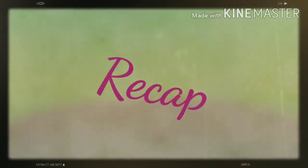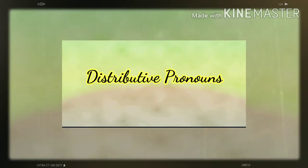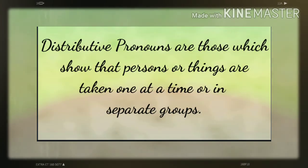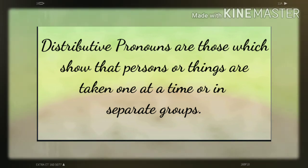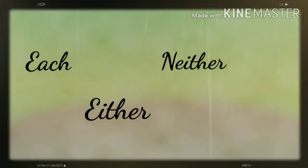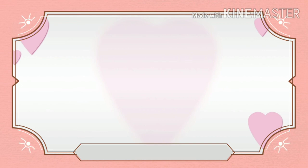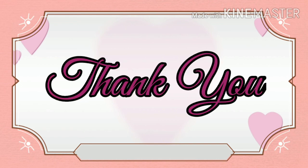Now let's summarize what we learned today. Distributive pronouns are those which show that persons or things are taken one at a time or in separate groups. Each, either, and neither are the examples of distributive pronouns. Okay children, it's time to say goodbye — see you tomorrow, thank you and have a nice day.